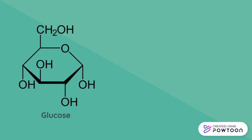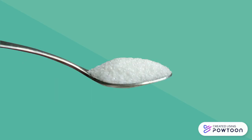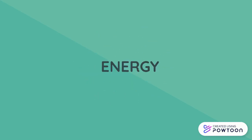Glucose is a chemical compound with the following structure. This compound contains 6 carbon atoms, 12 hydrogen atoms, and 6 oxygen atoms. Glucose is a Greek term for sweet, which makes sense because it is a basic sugar unit. This compound provides us with energy so that our body can move the way that we want it to.